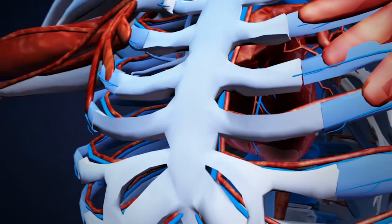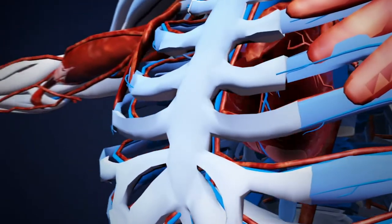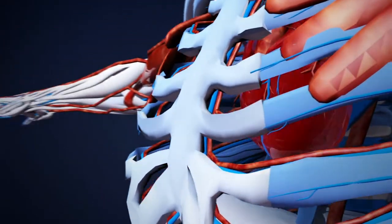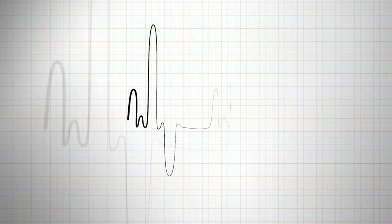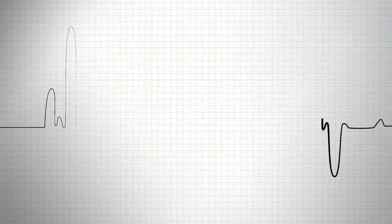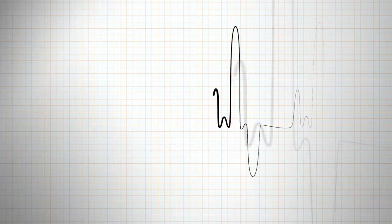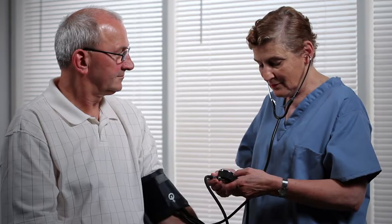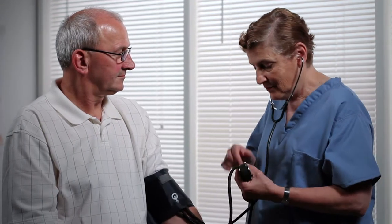Diastolic pressure is characterized by physiological and anatomical circumstances, such as the degree of patency of peripheral arteries, heart rate, and elasticity of vessel walls.